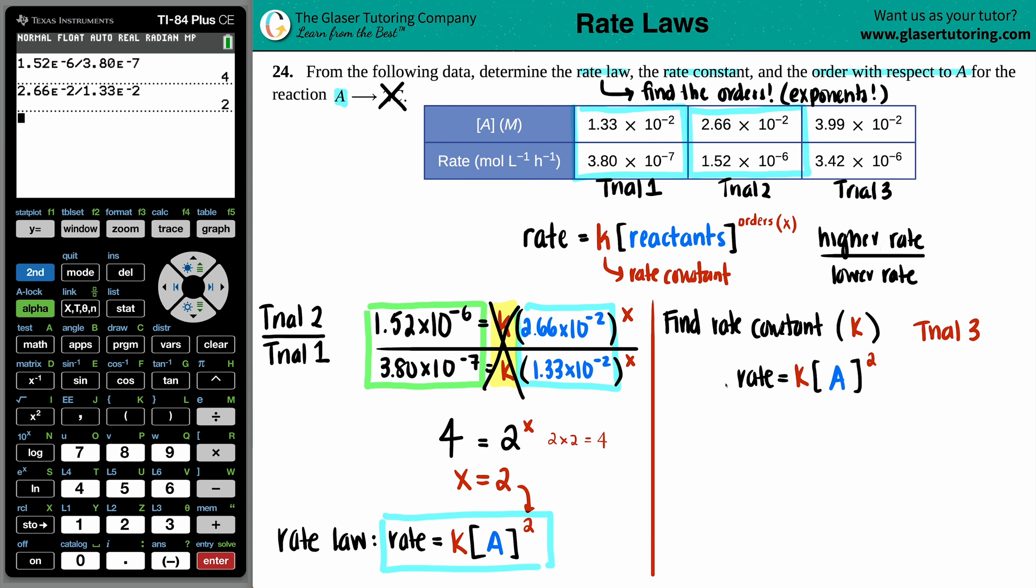So, I'm going to use all my trial values for 3 to get my K value. So, for trial 3, the rate was 3.42 times 10 to the negative 6th. And this equals the K value. And now we're going to times that by the concentration and we're going to square it. The concentration of trial 3 was 3.99 times 10 to the negative 2nd.